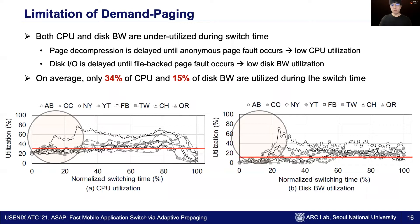We found out that both CPU and disk bandwidth are underutilized in switch time. This is because both page decompression and disk I/O are delayed until a page fault occurs in demand-paging-based page fetching. The graph shows the CPU and disk bandwidth utilization during switch time of benchmark applications. On average, only 34% of CPU and 15% of disk bandwidth are utilized.